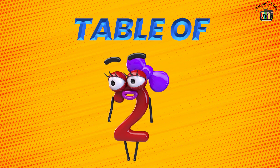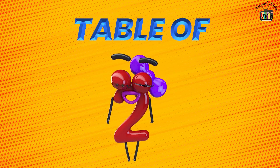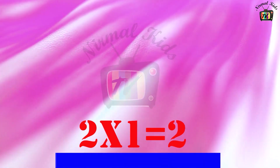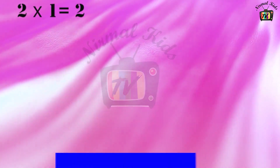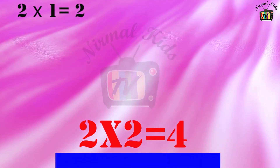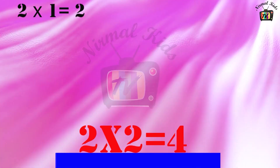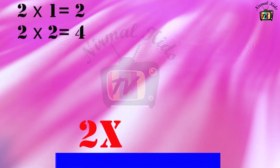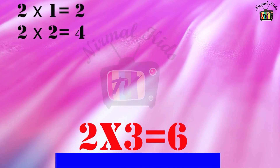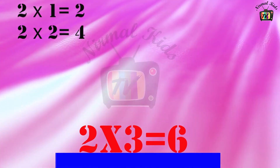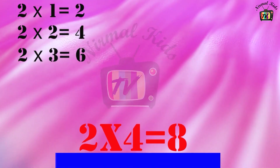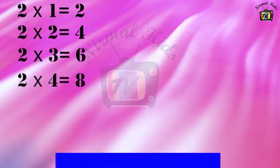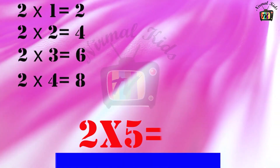Table of 2. 2 1 is 2. 2 2 is 4. 2 3 is 6. 2 4 is 8. 2 5 is 10.